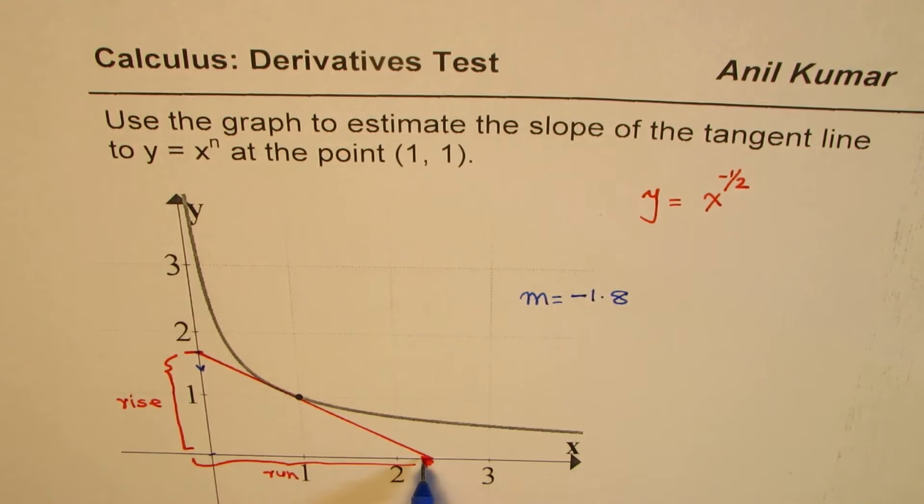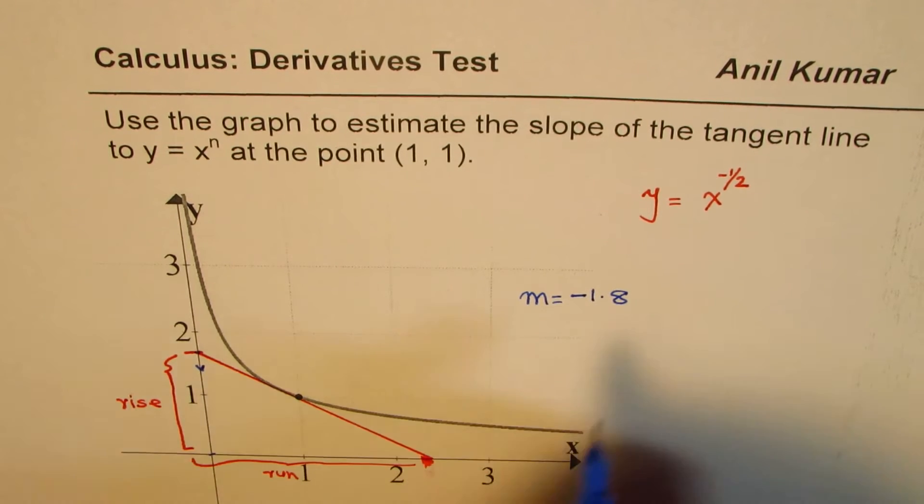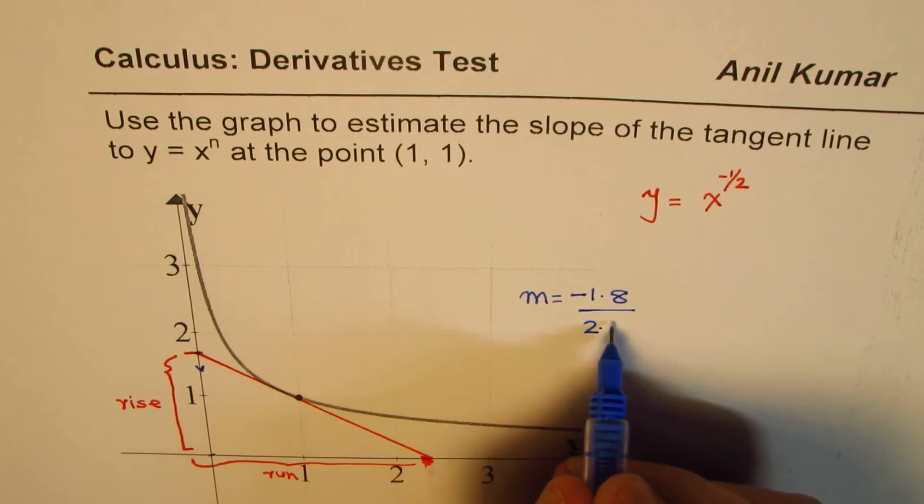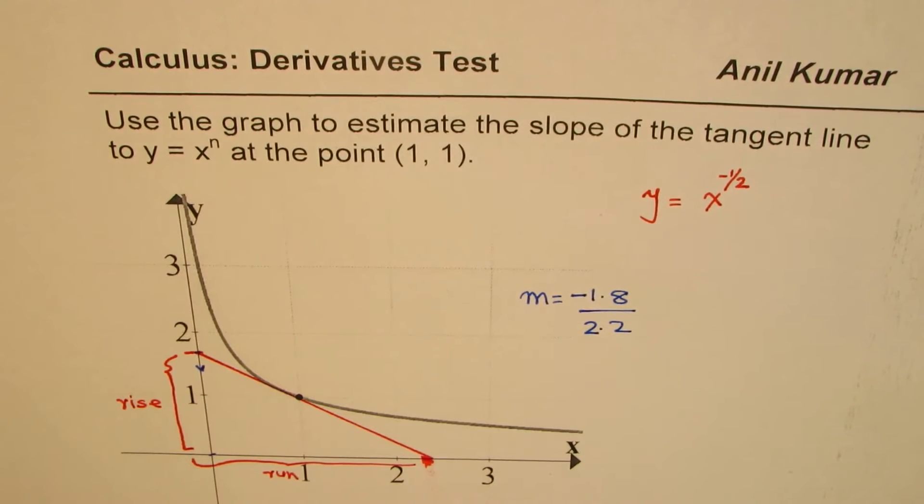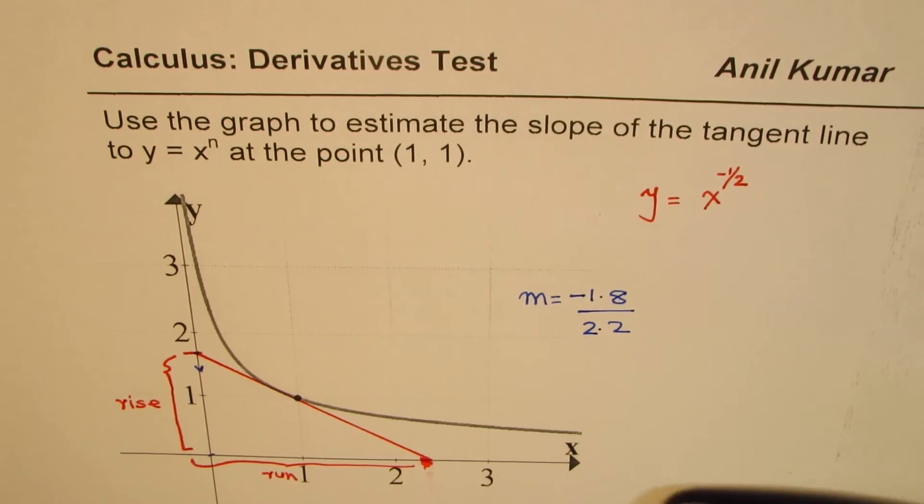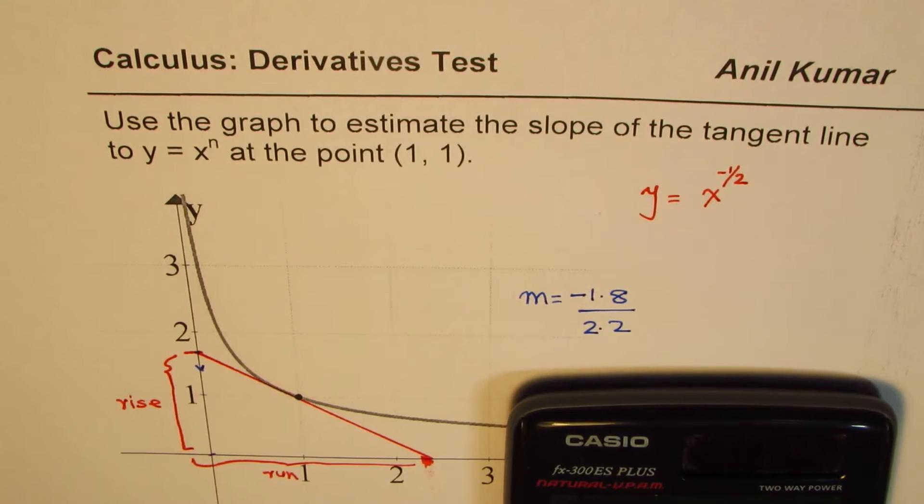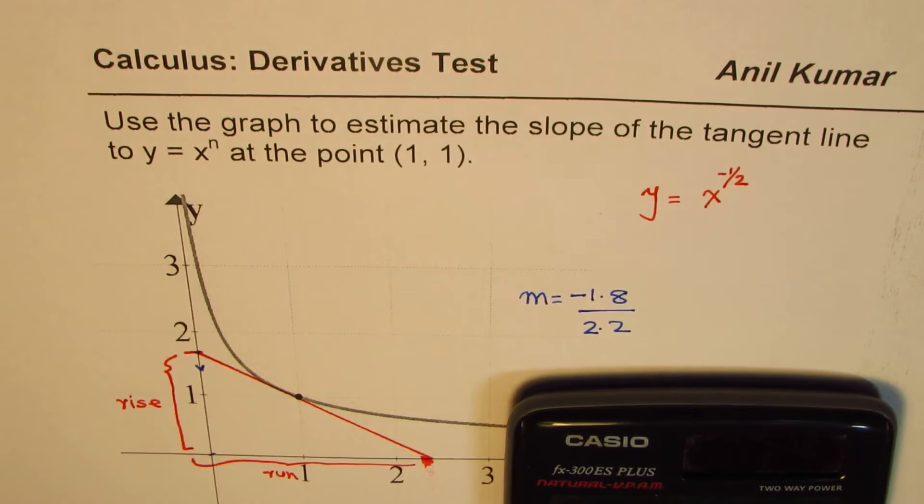Do you see that? I'm going downwards and then run is towards the right side of let's say 2.2 units. So the tangent of this particular function at the given point for the given graph will be negative value of 1.8 divided by 2.2.